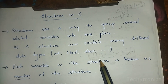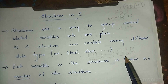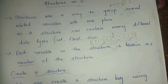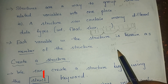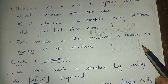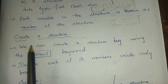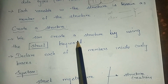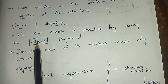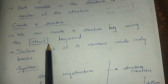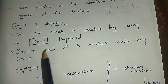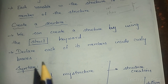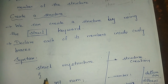So we can use different types of data — that is called a structure. Each variable in the structure is known as a member of the structure. A structure can hold an int value and a character value — member one, member two. To create a structure, we use the struct keyword, and declare each member inside curly braces.